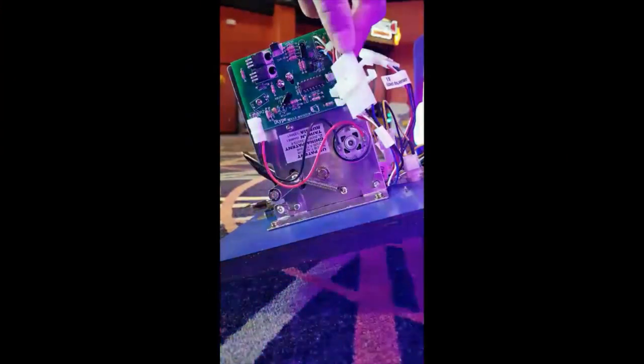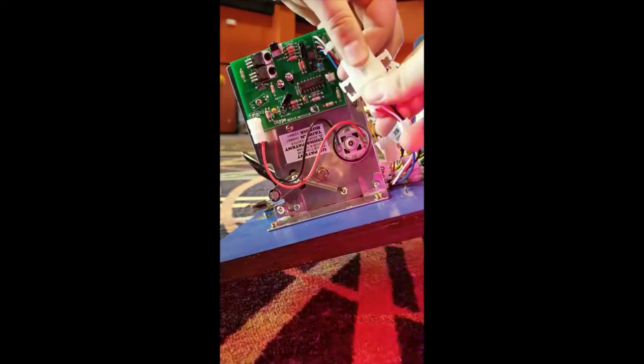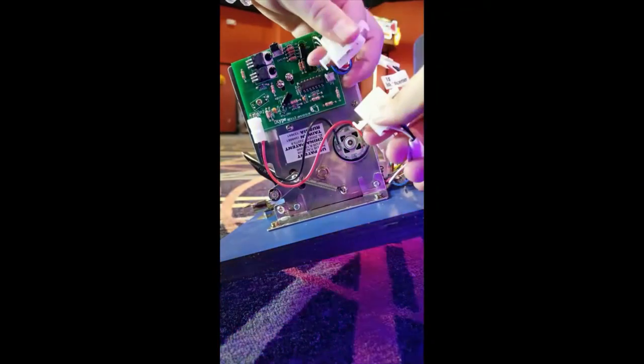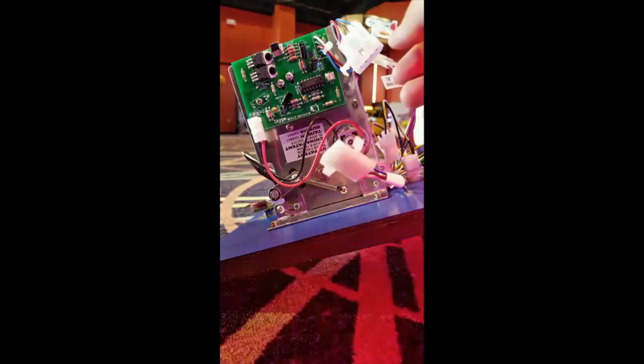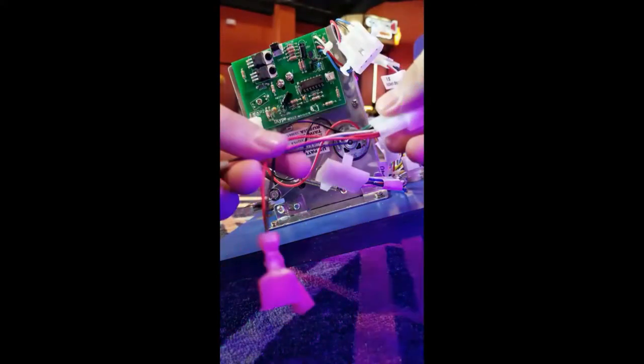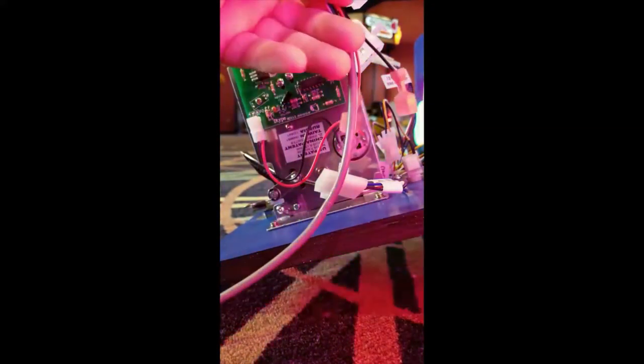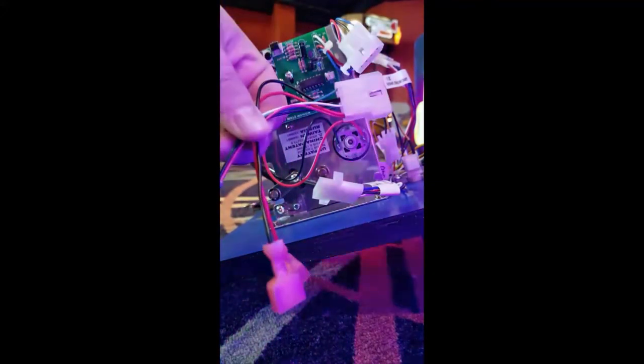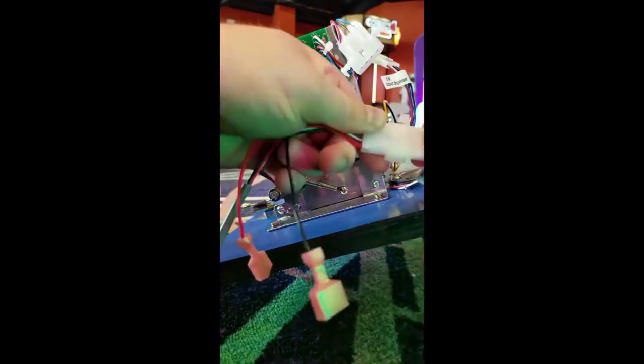Next is a redemption game. Unplug the ticket mech connector in the game, then use our 4-pin Molex connector to take place of the ticket mech. The two red and black wires we used for power on a video game will be unused for a redemption game as we get the power from that 4-pin Molex connector.